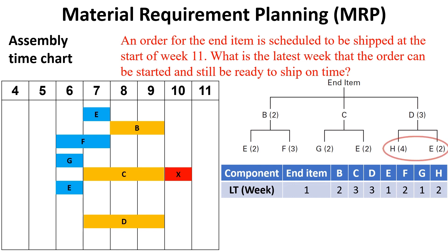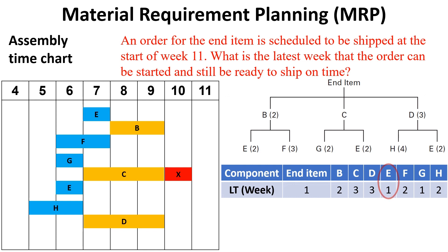The same for subassembly D — it needs items H and E to be assembled. Item H lead time is two weeks, so going backward from the start of week 7 by two weeks means that the order of item H must be released at the beginning of week 5. For item E, the lead time is one week, so going backward from the start of week 7 by one week means that the order of item E must be released at the beginning of week 6.